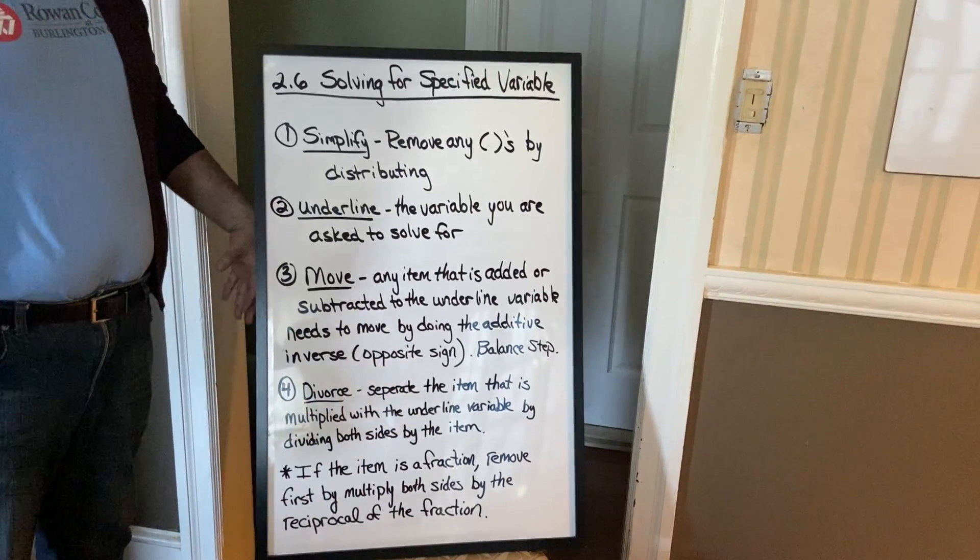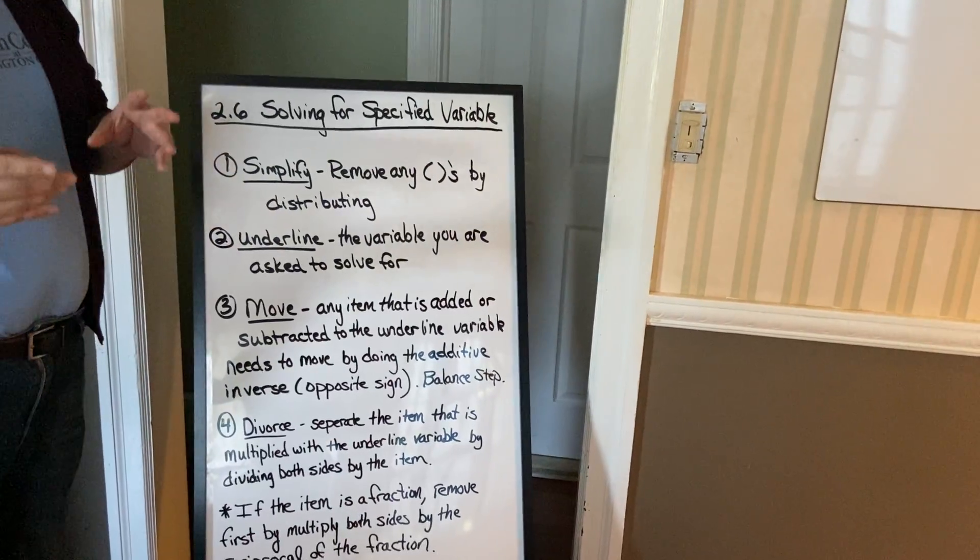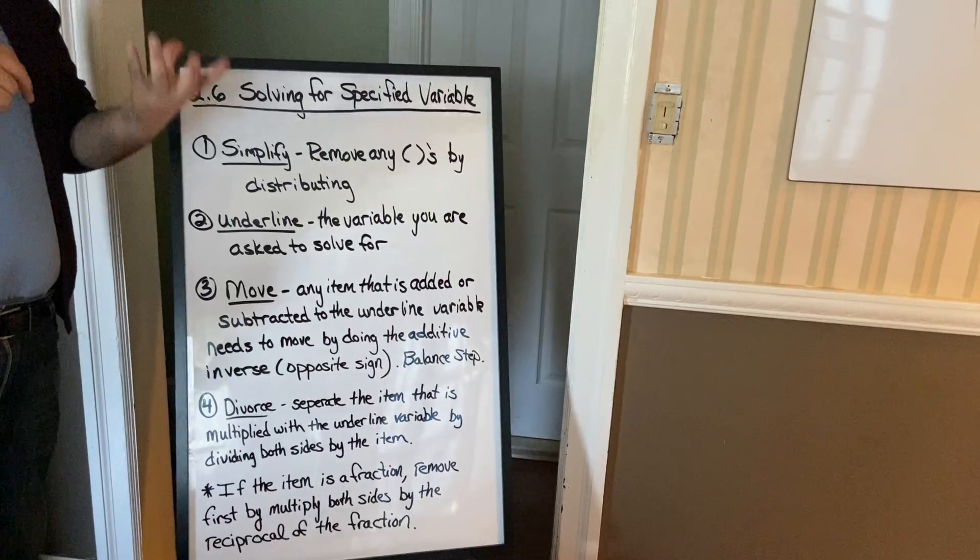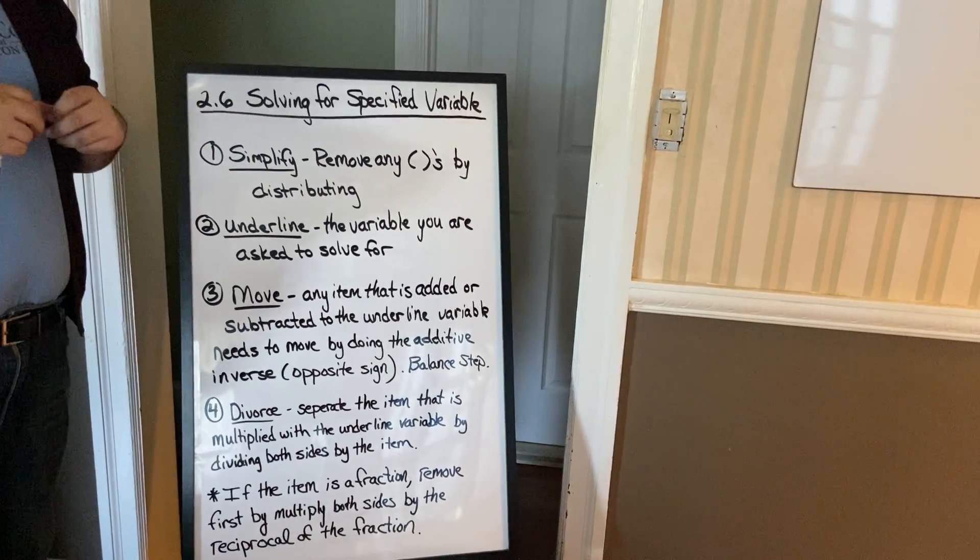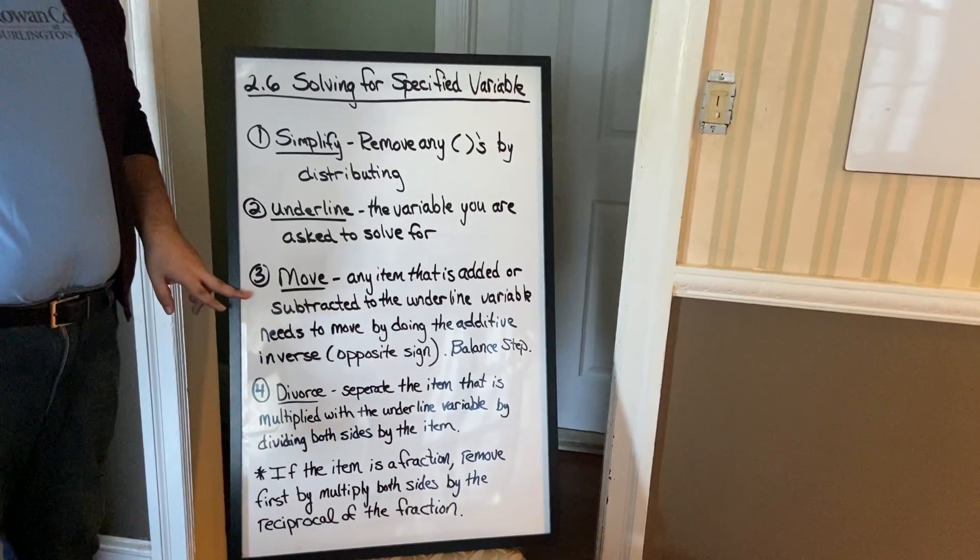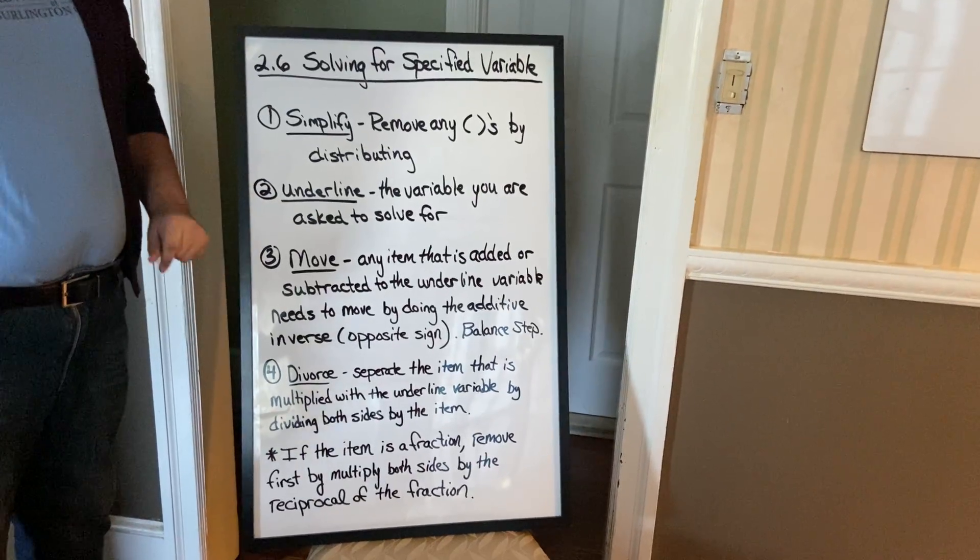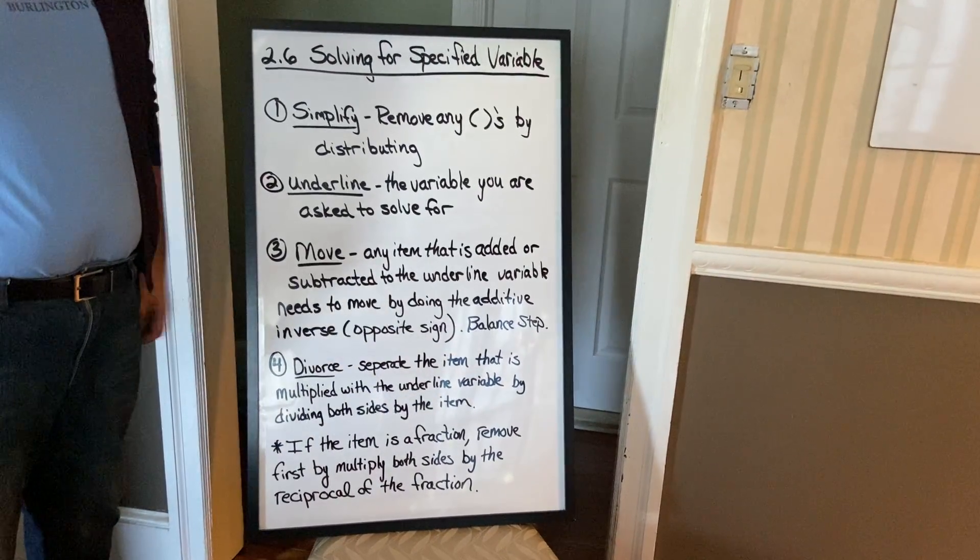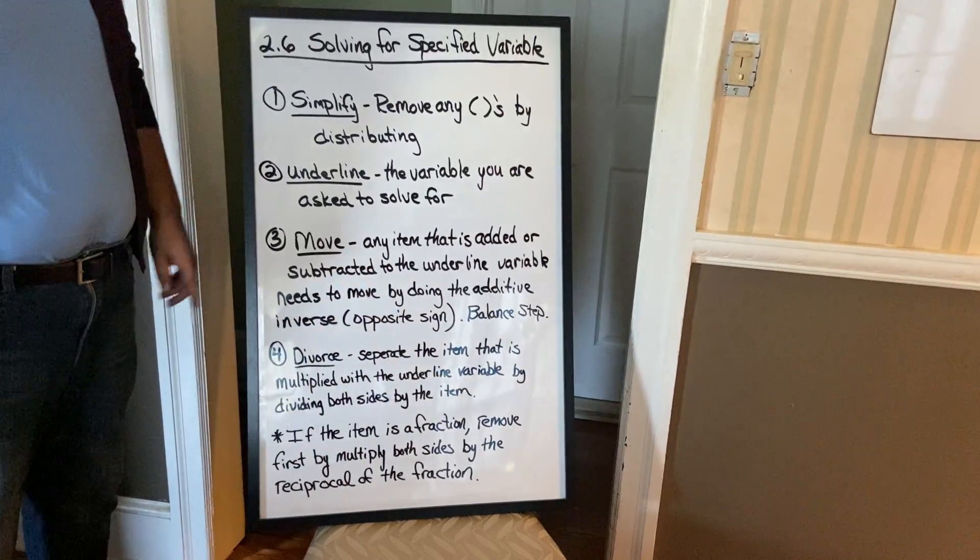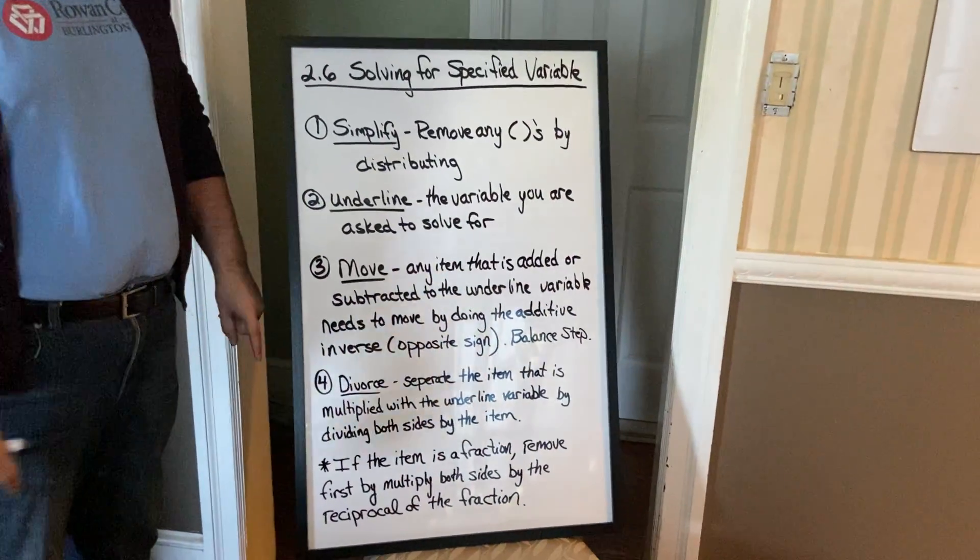Then, any item that's added or subtracted. Now, normally, we would say any constant, but because we only have letters, we're just going to say any item. They could be a variable, a letter. They could be a number. So, any item that's added or subtracted to the underlying variable, you want to move that first. How do we move anything? Well, we did the additive inverse. Remember, that just means the opposite sign. And you got to remember that the moving step is a balancing step. Whatever you do to the left, you have to do to the right and vice versa.